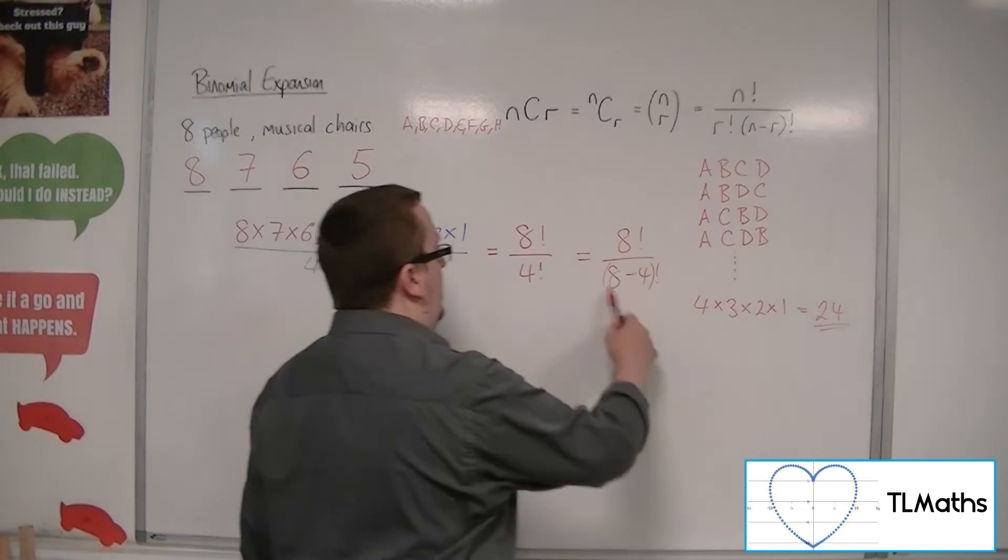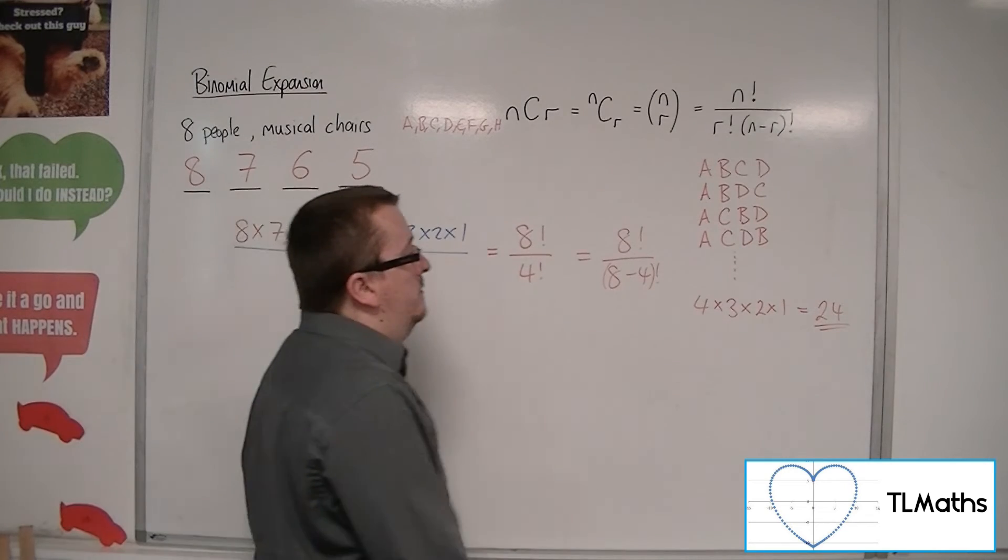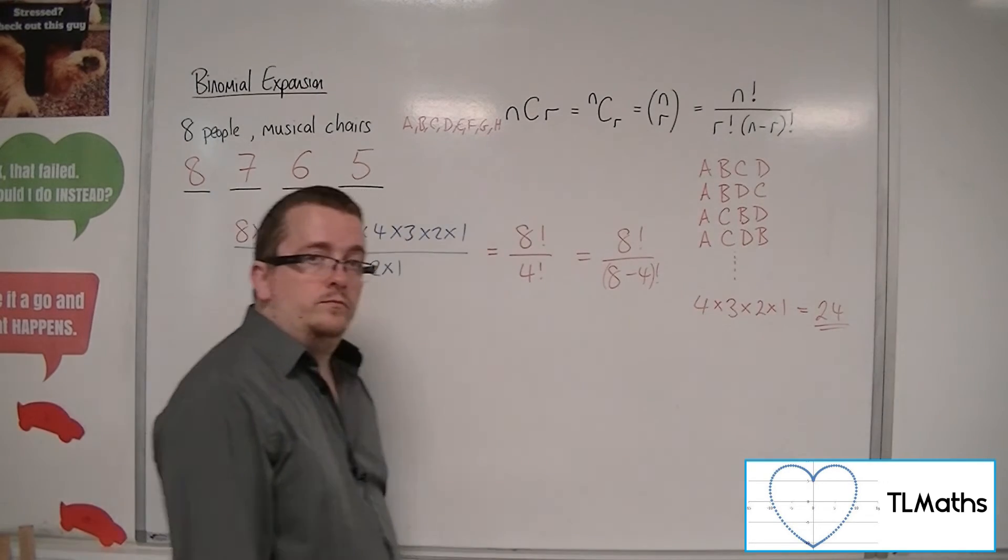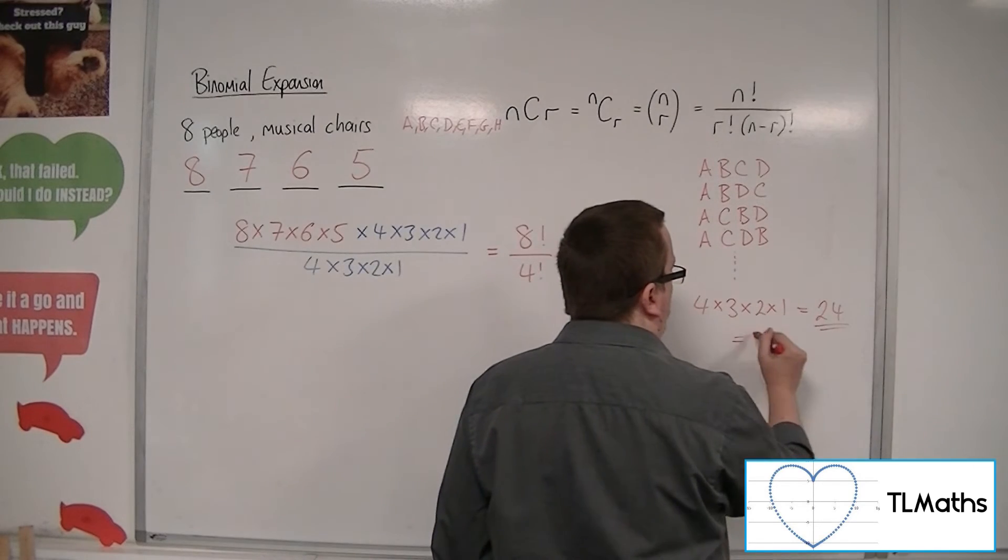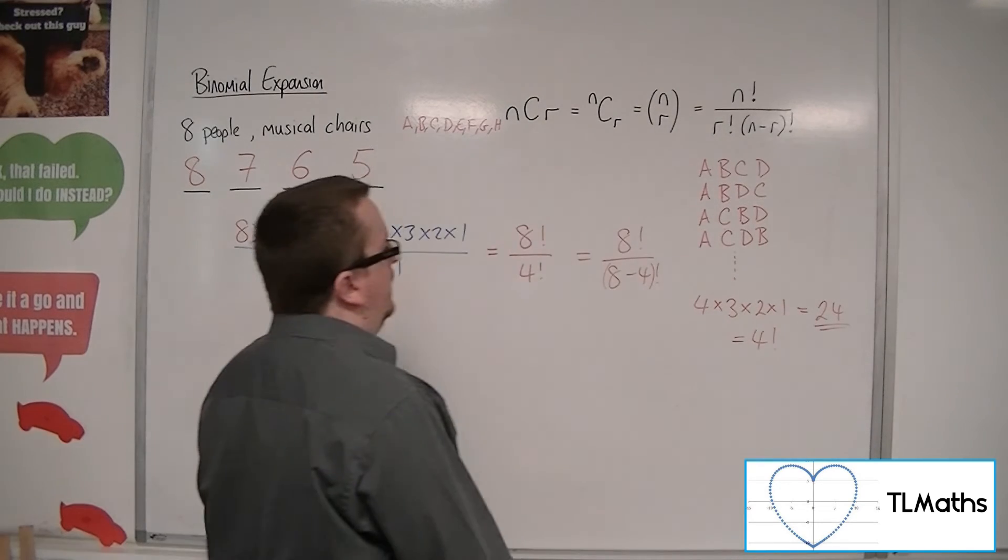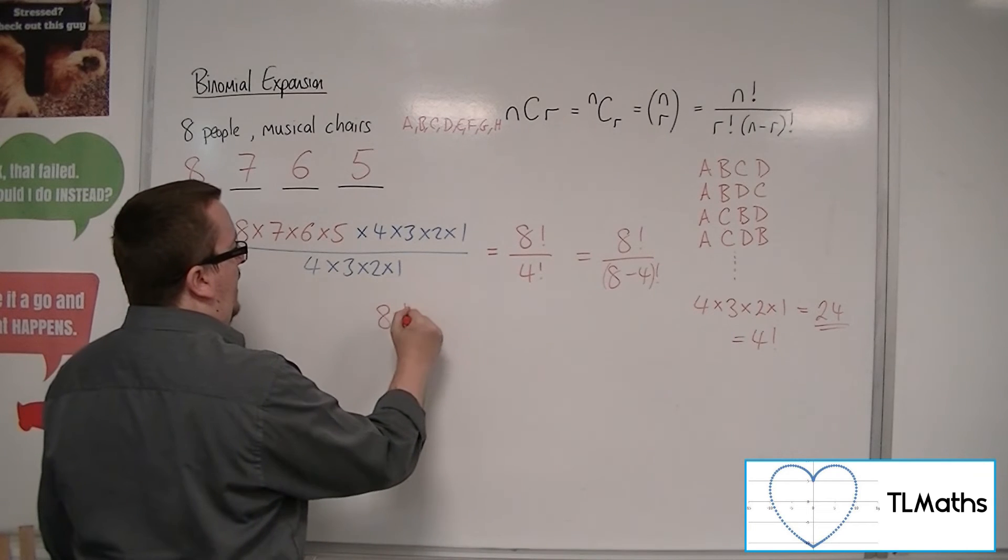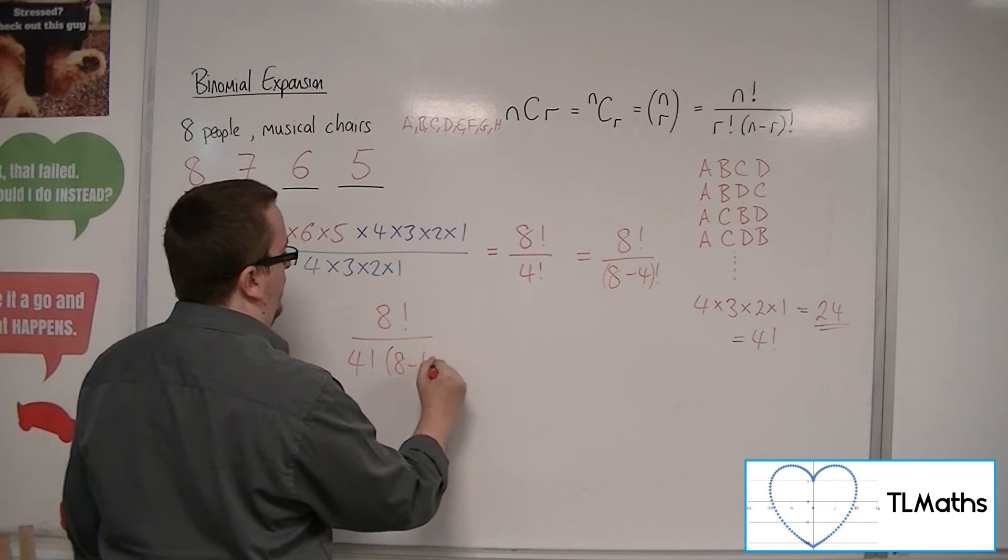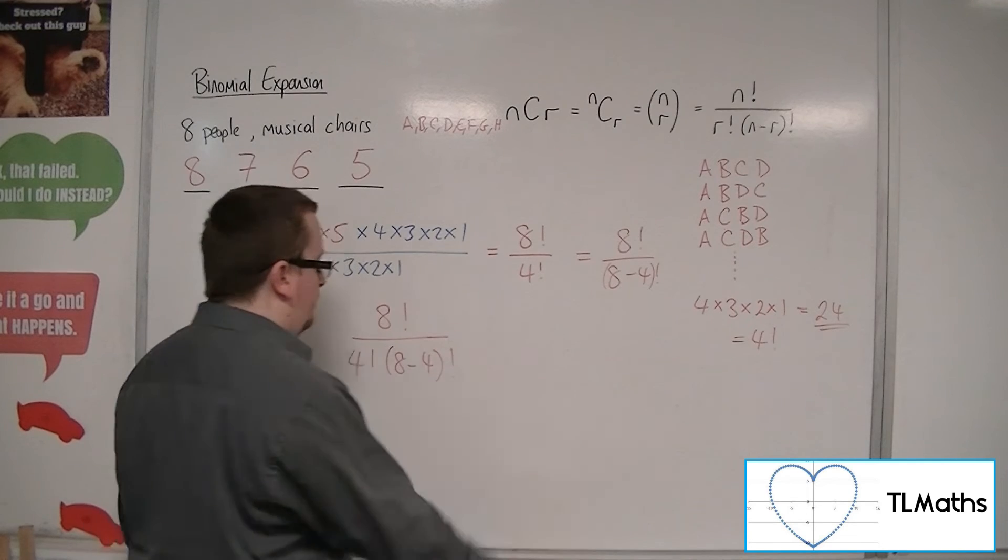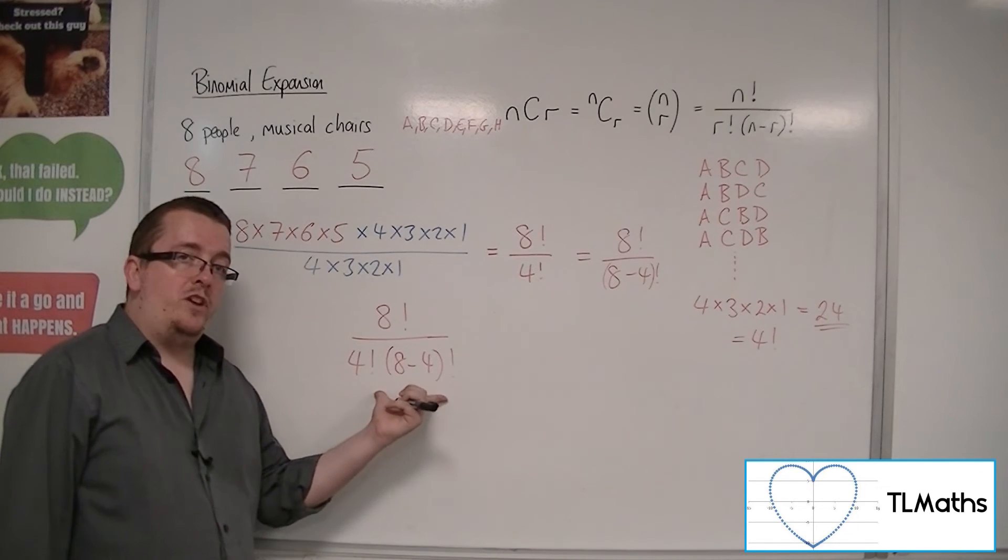So I need to divide this by the number of ways of picking four people. Now, 4×3×2×1 is just four factorial. So if I'm going to divide this by four factorial, this is 8! over 4!(8-4)!.